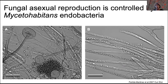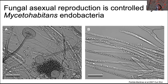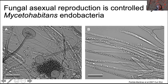Even before we started working on this system, it was known from Christian Hertfeck's lab that these endobacteria control asexual reproduction of the fungus. A fungus that has endosymbionts will reproduce asexually in the typical way of mucoromycotina. But when mycetohabitans is removed by antibiotic treatment, the fungus is only able to reproduce vegetatively.